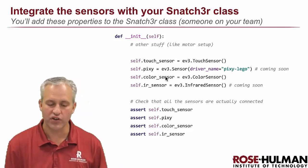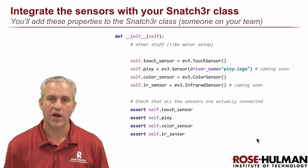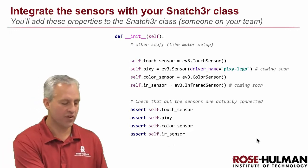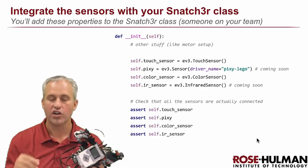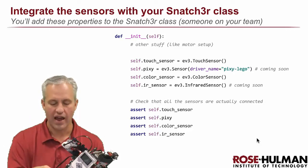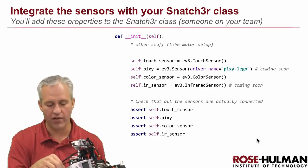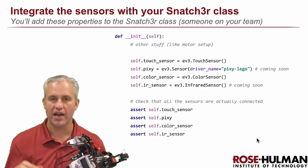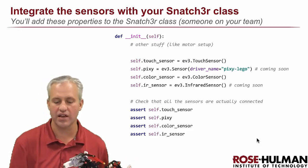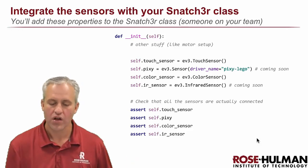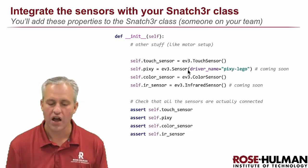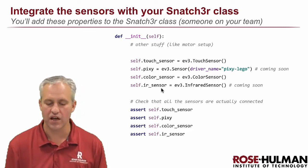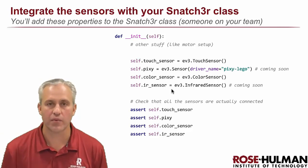We also recommend that after you make each sensor, go ahead and do an assert for it. What this assert does is: if something comes unplugged and there just is no touch sensor, your program will crash right away — and you actually want that. If there's a problem and it doesn't find the touch sensor or something like that, crash the program. So right now you know about touch sensor, you know about color sensor, and we will teach you about the pixie and the IR sensor in the coming videos.